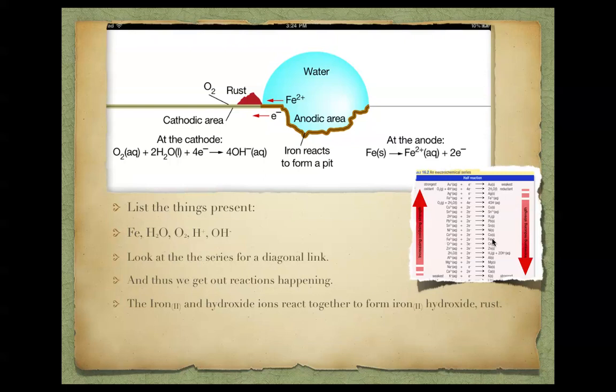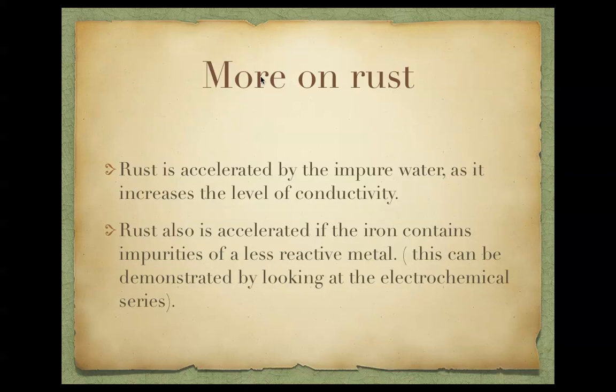If we have things that are more reactive than iron, they will be preferentially corroded so the iron won't rust as much. We'll move on and talk about that in a second. So the reason we get more rust is we have impure water or impurities which are less reactive. So if the iron contains silver, we're going to have acceleration of rust in that.